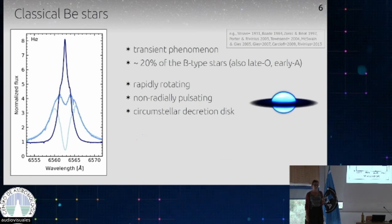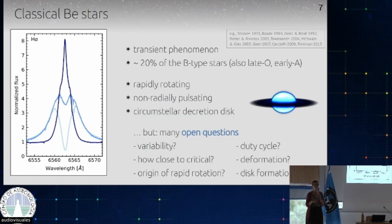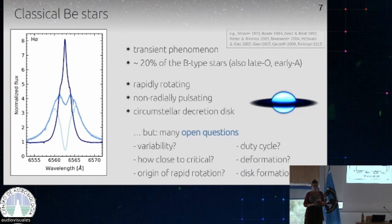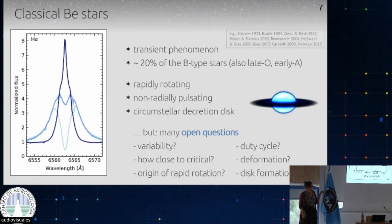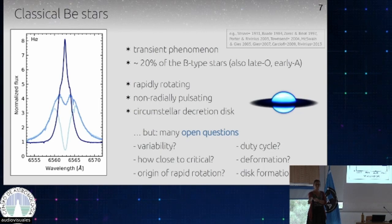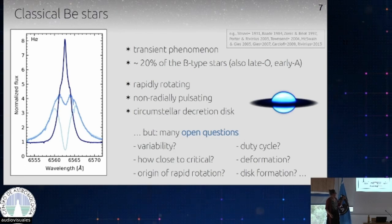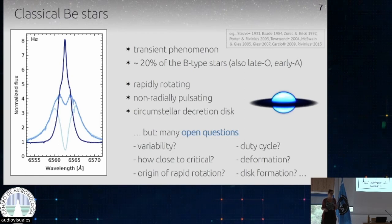But of course there are a lot of open questions. The phenomenon is transient, so something must happen that leads to the buildup of the disk, then this disappears and comes again. It's not really clear what the duty cycle is or what is causing the disk buildup. It is also still not very clear how fast they are rotating relative to the critical velocity — the velocity at which a star would break apart. Stars are probably rather close, maybe 70, 80, or 90 percent, but it's really hard to measure.